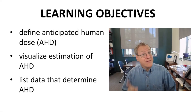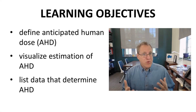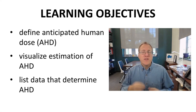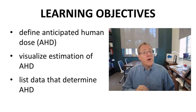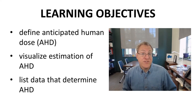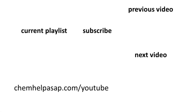We have defined anticipated human dose. We used typical dose-response curves to illustrate the idea of estimating AHD, and we listed other types of data that are used for AHD estimates. I hope you enjoyed this video and better understand the concept of anticipated human dose. Please leave a like, subscribe to the channel, or make a comment below. Take care.